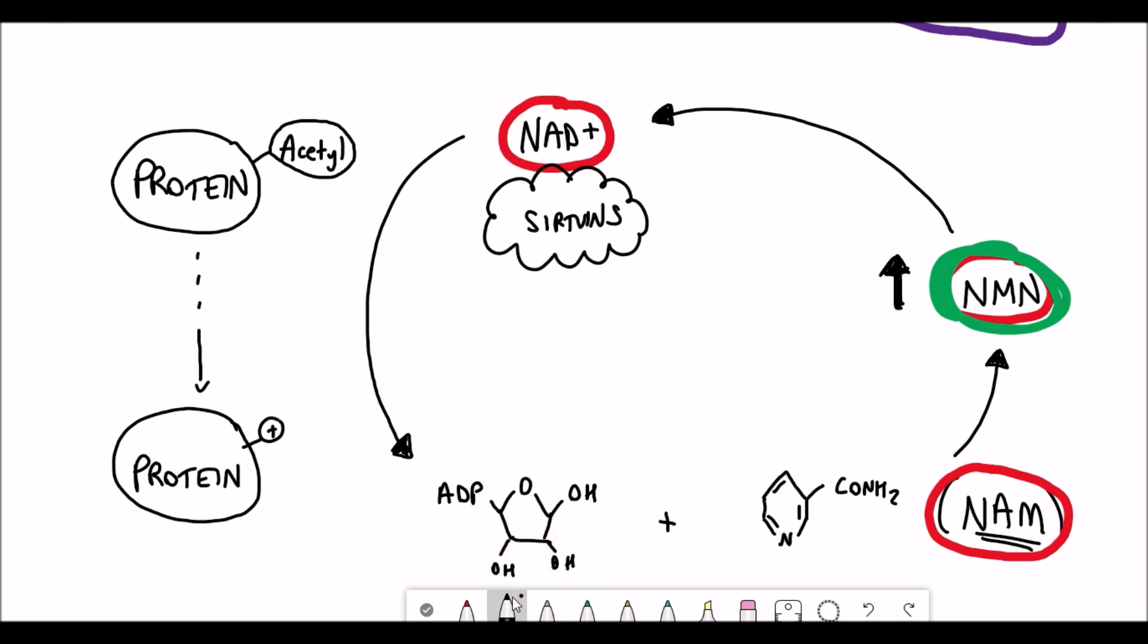So the idea behind supplementation is that to counteract the loss of NAD plus, you can increase the levels of NMN and therefore you, in theory, should generate more NAD plus. From further reading and from listening to many David Sinclair interviews, there are some arguments that you must take NMN with another compound known as resveratrol. The reasoning behind this is that the two of them together can have an enhanced effect.